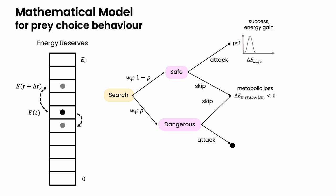If it chooses to attack the dangerous prey, it can either succeed or fail, and this depends on its hunting ability. If it fails, then it incurs an injury. And it repeats this process again.